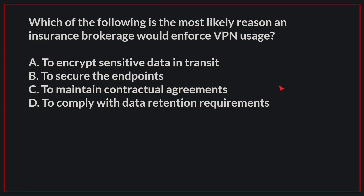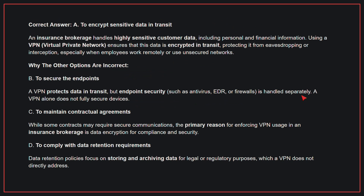Which of the following is the most likely reason an insurance brokerage would enforce VPN usage? The correct answer is A, to encrypt sensitive data in transit. An insurance brokerage handles highly sensitive customer data, including personal and financial information. Using a VPN ensures that this data is encrypted in transit, protecting it from eavesdropping or interception, especially when employees work remotely or use unsecured networks.